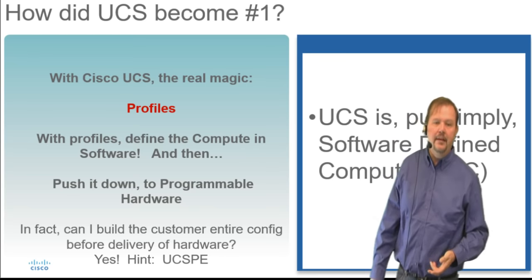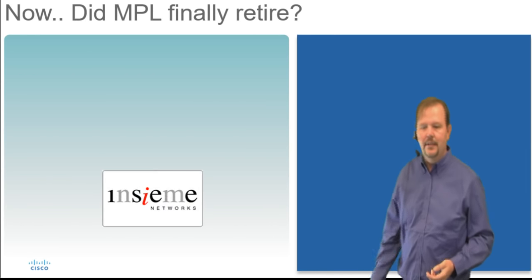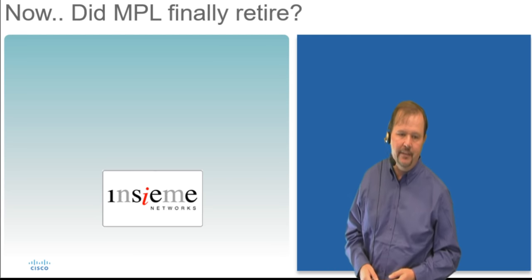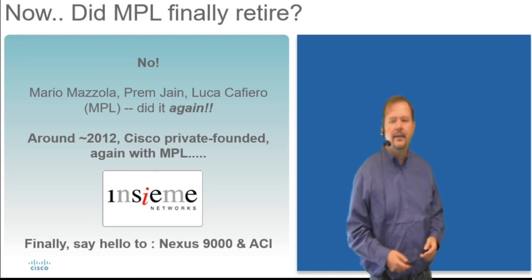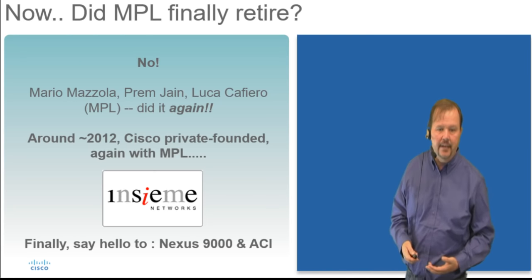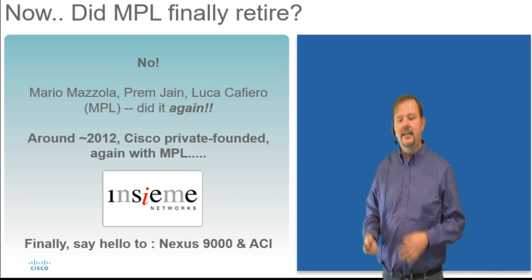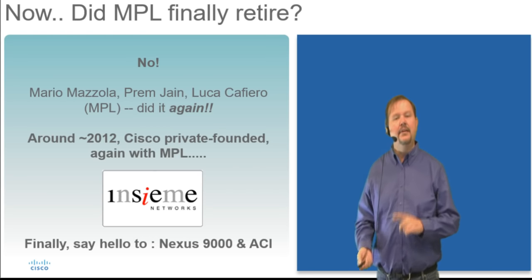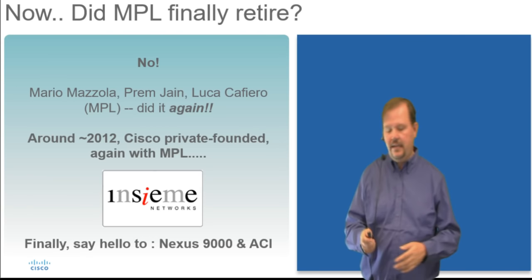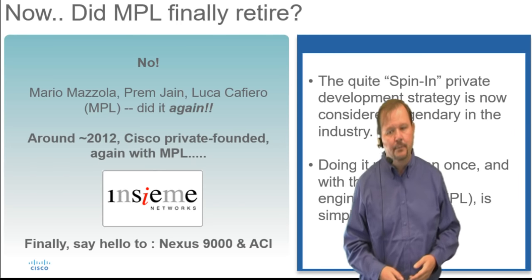You would think that Mario, Prem, and Luca would have to be done by now — but they still had one more up their sleeve. They started NCMA, which was another privately funded company. What came out of this company was the Nexus 9000 in two different modes: one platform, two different modes — the Nexus 9000 in NXOS mode, and the Nexus 9000 in ACI mode.